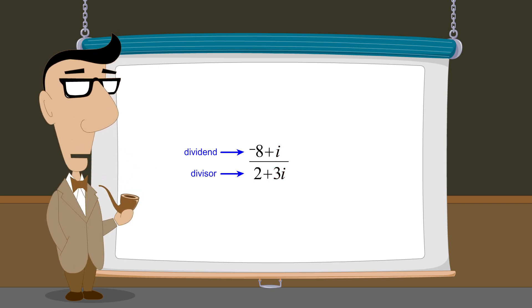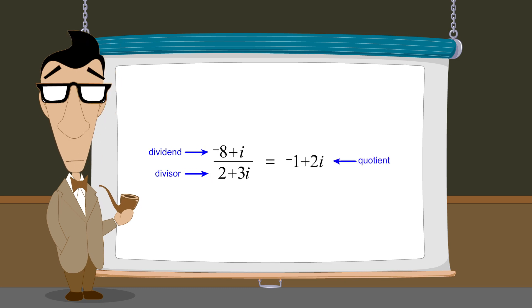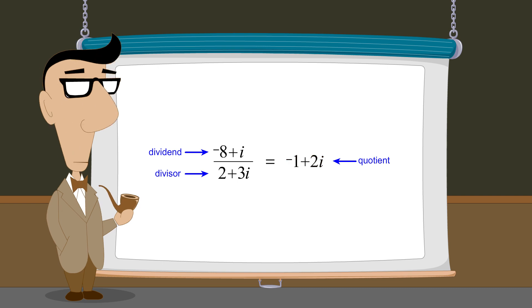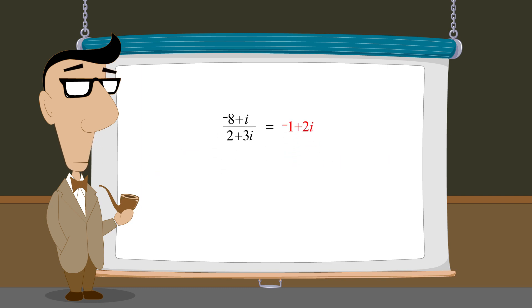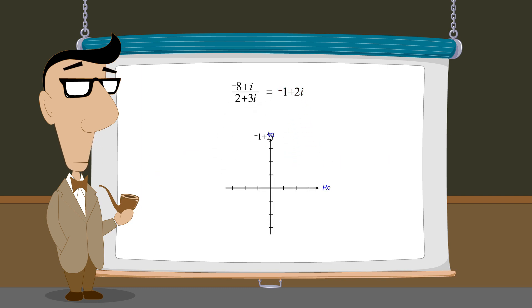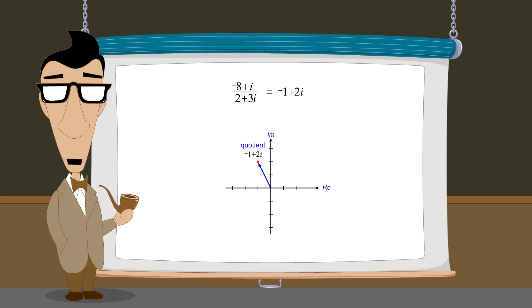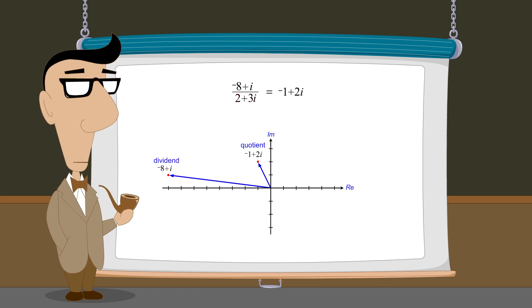The result of this division will be a complex quotient that may also contain a real part and an imaginary part. We will also see how the vector representation of the quotient is geometrically related to the vectors of the dividend and the divisor.